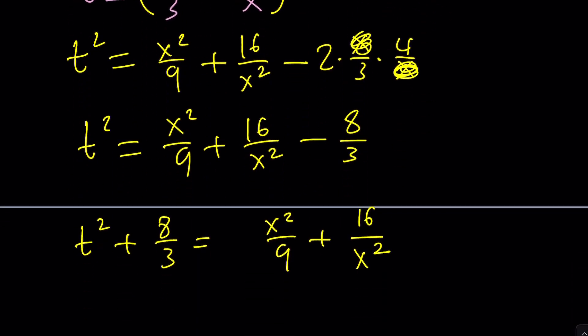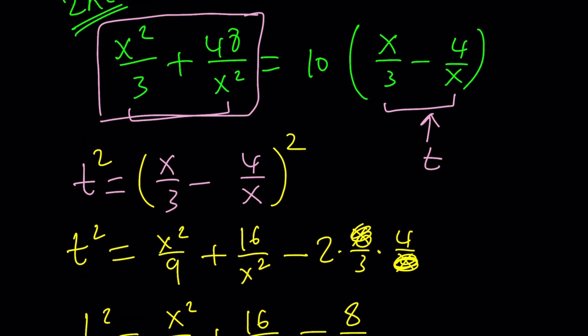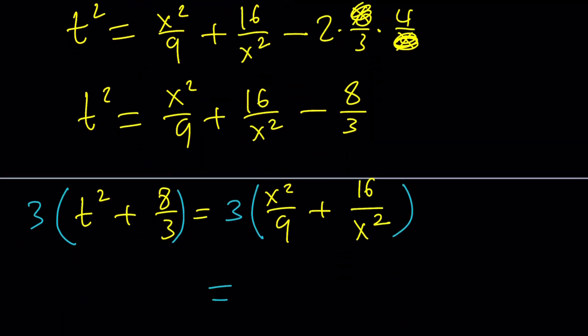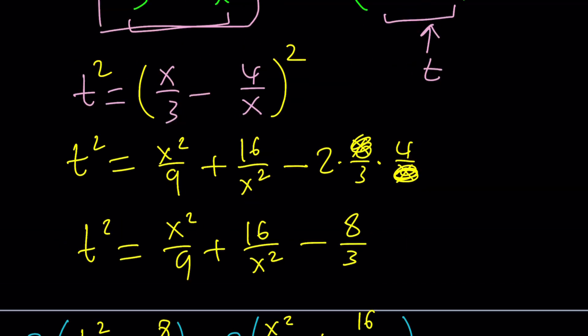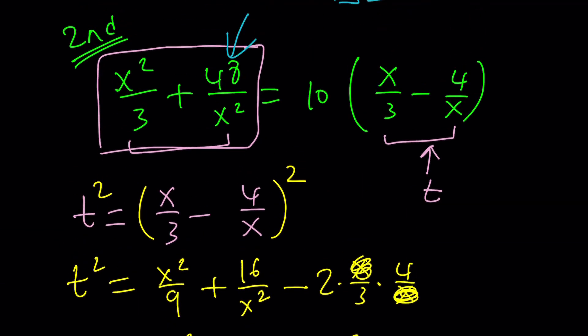So, we're going to go ahead and do this. We're going to multiply both sides by 3. Guess what that does? That gives us the expression right here, because if you multiply by 3, this gives you x squared over 3 after cross-cancelling, plus 48 over x squared, which is what we have on the left-hand side. Beautiful.